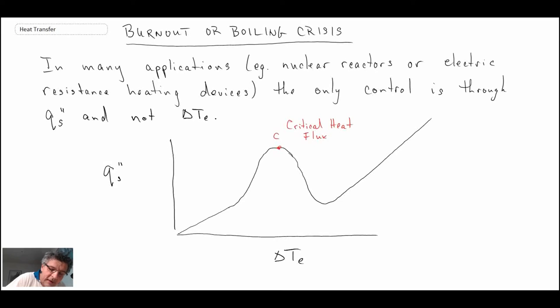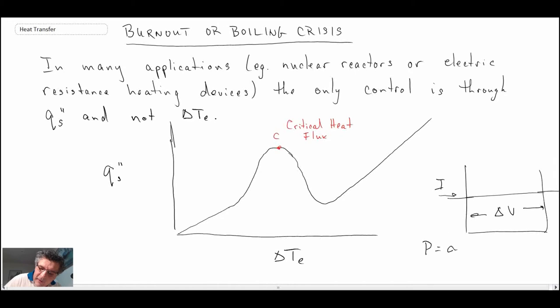If you were doing the experiment that Nukiyama was doing, remember Nukiyama, what he had is he had a pool, he had a wire coming through it, so he was sending a current through the wire, he was measuring the delta V here, and we know power is equal to Q, which is equal to IV. So he was able to control the current, and he was able to measure the voltage, and that enabled him to control the power. He had no way of controlling the wire temperature itself.